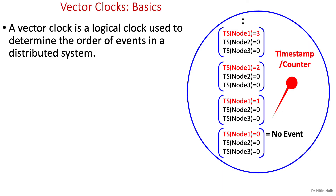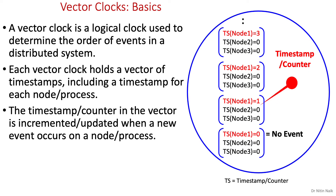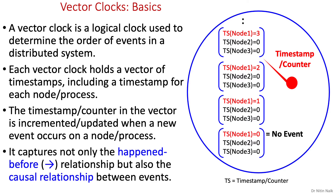A Vector Clock is a logical clock used to determine the order of events in a distributed system. It does not measure time and is an improvement on Lamport's clock. Instead of holding only one timestamp of its own node or process, each Vector Clock holds a vector of timestamps, including a timestamp for each node or process. The timestamp or counter in the vector is incremented or updated when a new event occurs on a node or process. It captures not only the happened-before relationship but also the causal relationship between events.